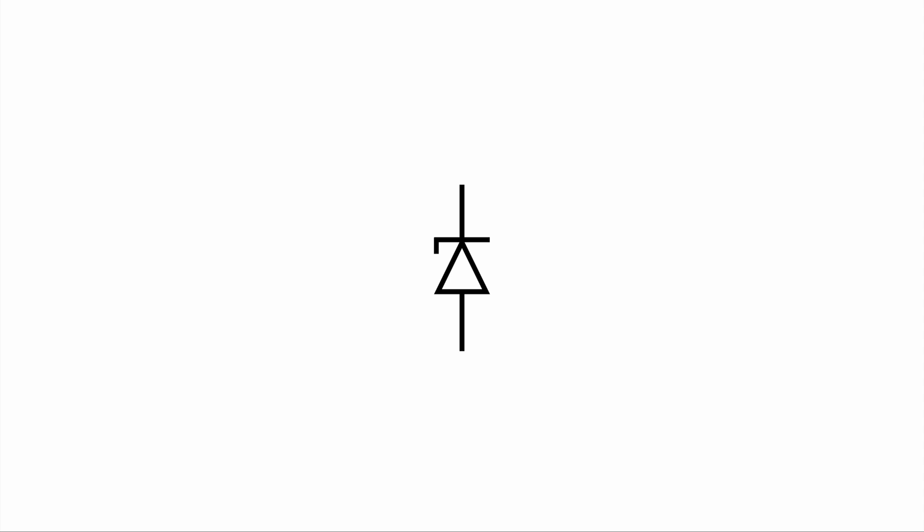This is the graphical symbol for the Zener diode. At the top the cathode and at the bottom we have the anode. So this is all pretty similar to the standard diode.